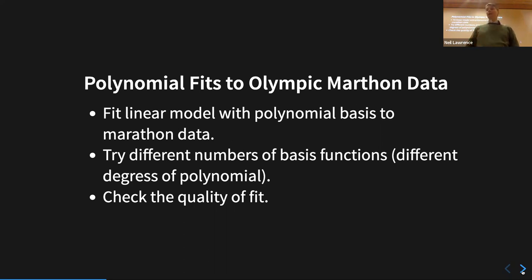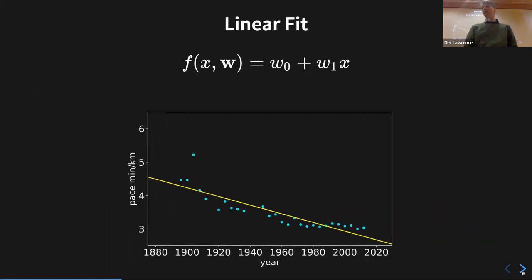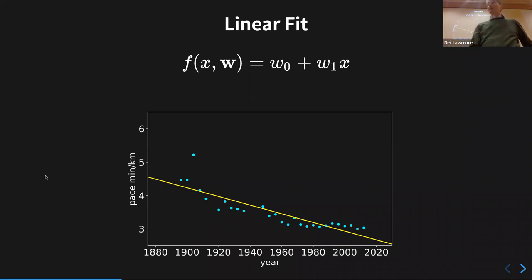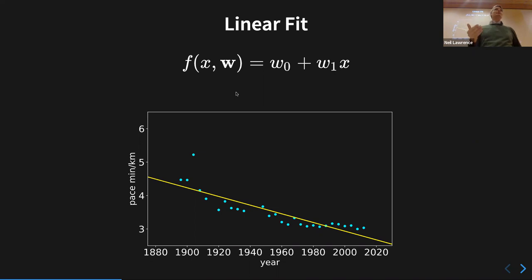We'll fit the linear model with a polynomial basis to this marathon data, trying different numbers of basis functions. The classic fit assumes two components: an intercept w_0, the point at which the line would go through year zero, and a gradient estimating how much better we've gotten over time. Note that both parameters have interpretations. In machine learning we tend not to focus on that — we focus on the prediction itself — whereas statistics focuses much more on that type of interpretation.